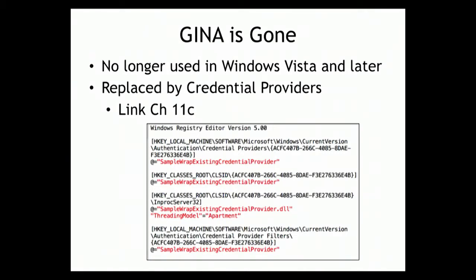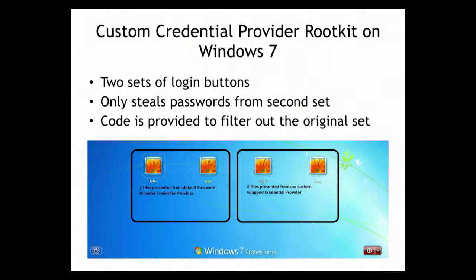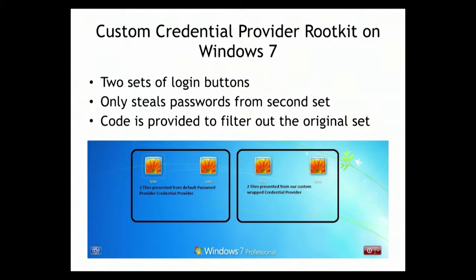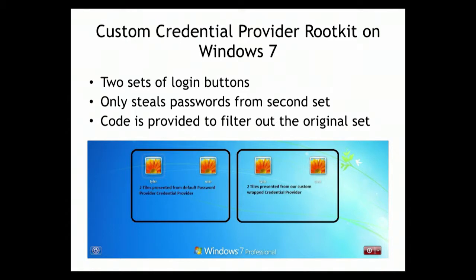Gina is gone - this particular technique has been deprecated by Microsoft. They've moved beyond it with something called credential providers, with a new registry key system. It is, of course, also vulnerable. There's a more complicated exploit written up where someone changed values in those registry keys to add a second set of credential providers. When you log in there are two sets of buttons - the real ones going to Windows and fake ones going to the malware. Then there's another file to adjust to hide the real ones, so users only see the set that goes to the malware. He accomplished the same result on Windows 7. Microsoft still has the same functionality because there are legitimate use cases for alternative login methods.